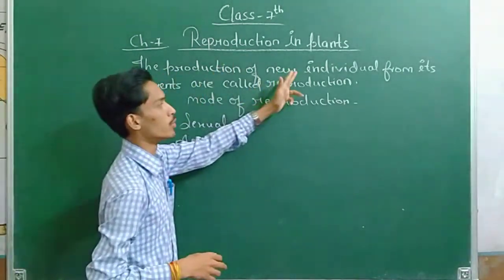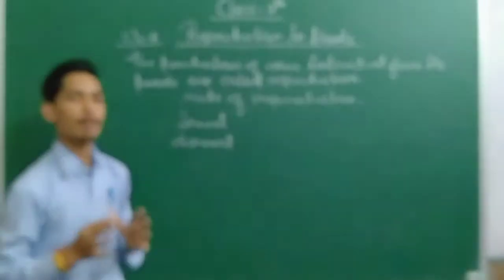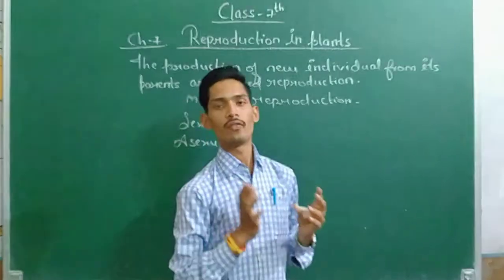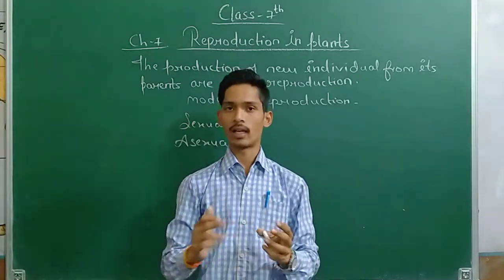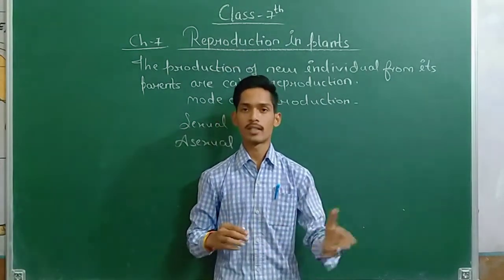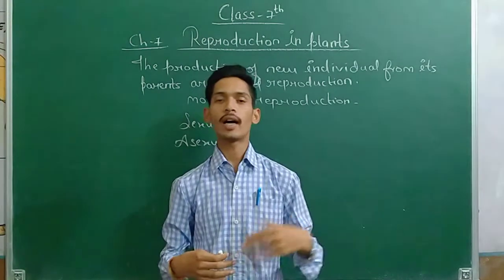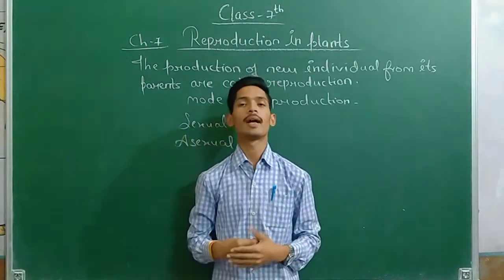The production of new individuals means from parents, male and female parents, a new individual is born. For example, child plants, animals, or human beings. In this chapter, we will talk about plants.